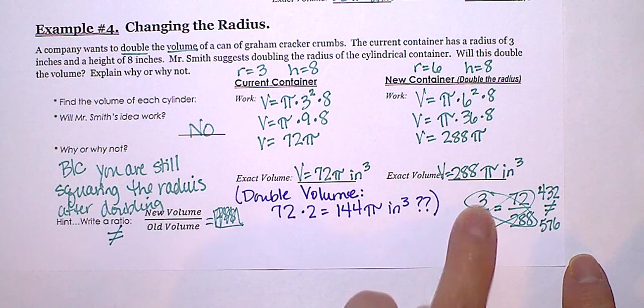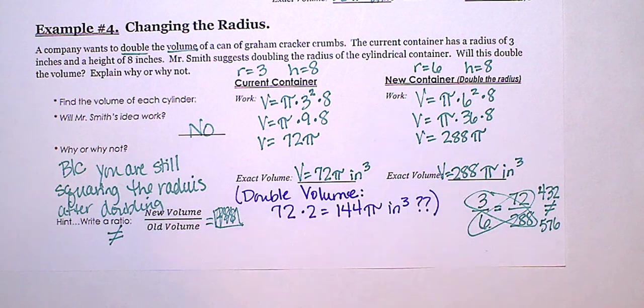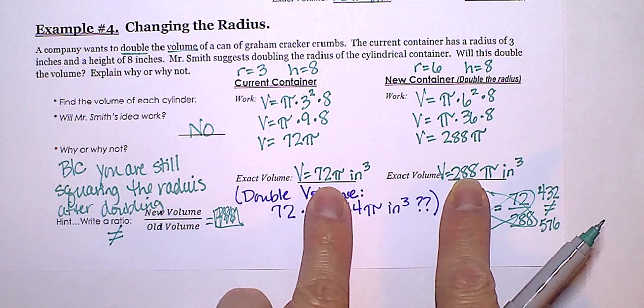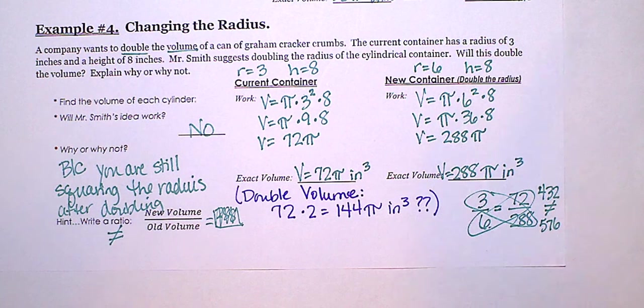Even though we doubled the radius, the volume did not double. Given what our answers were for the formula, and then also when we compared the two ratios.